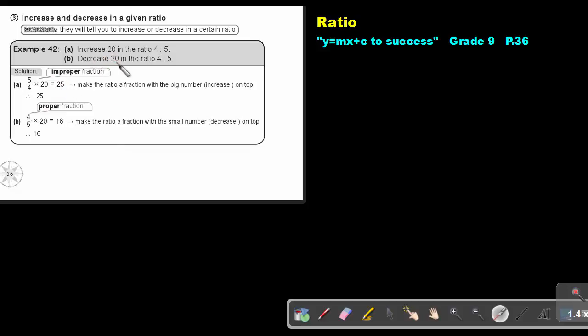If I say decrease 20 in the ratio of 4 to 5, now I also make it a fraction, but now I put the small one over the big one because I want to make it smaller. And I times it with 20 and it's going down from 20 to 16.